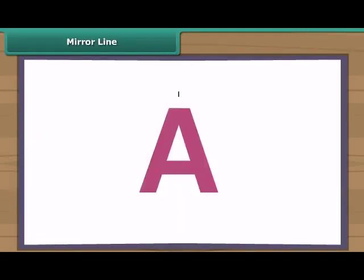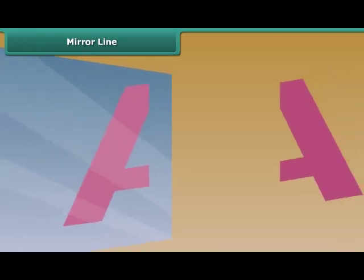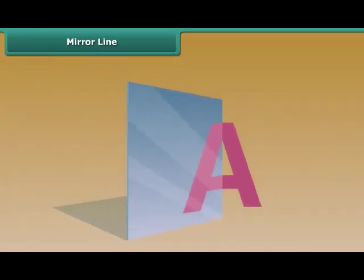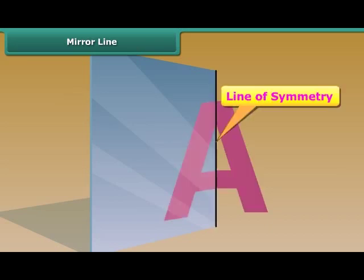A shape has a line of symmetry when one half of it is the mirror image of the other half. Now let's check whether the line drawn on A is the line of symmetry or not. We take its one half and place it in front of a mirror. Its one half is equal to the other half, which means that this is the line of symmetry.